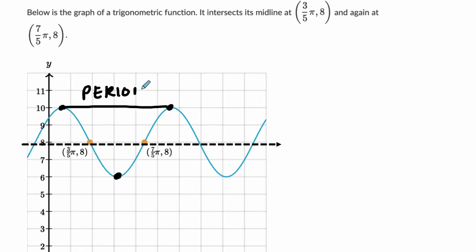So, maybe pause the video, think about what can we do. Well, let's think about it. We have our halfway point here, and these points cross our midline here at seven-fifths pi-eight and three-fifths pi-eight. So,